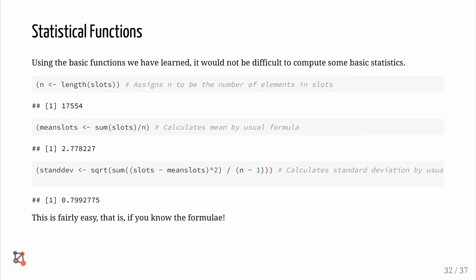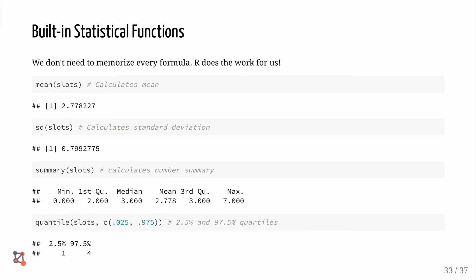Let's have a look at statistical functions. Using the basic functions we have learned, it would not be difficult to compute some basic statistics. Let's first create a variable called n, that is the number of elements in slots, 17,554. Now, let's calculate the mean of slots. We can also calculate the standard deviation. These are both fairly easy. That's if you remember the formulae. However, thankfully, R has built-in statistical functions. We don't need to memorize the formula. R does the work for us.